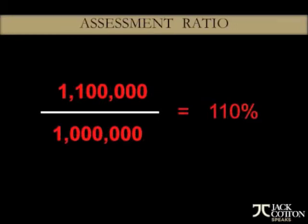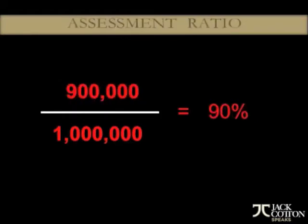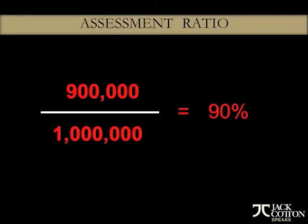So if the house sold for $1,100,000 and it was assessed for $1,000,000, you have an assessment ratio of 110%. If it sold for $900,000 and it was assessed for $1,000,000, the ratio is 90% — meaning homes in this area sell for 90% of assessment. You can calculate what the average assessment ratios are in any given market to know how your price compares to the benchmark.